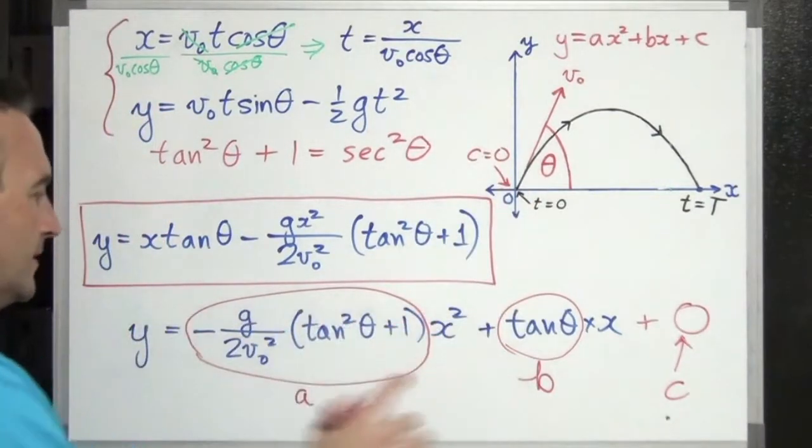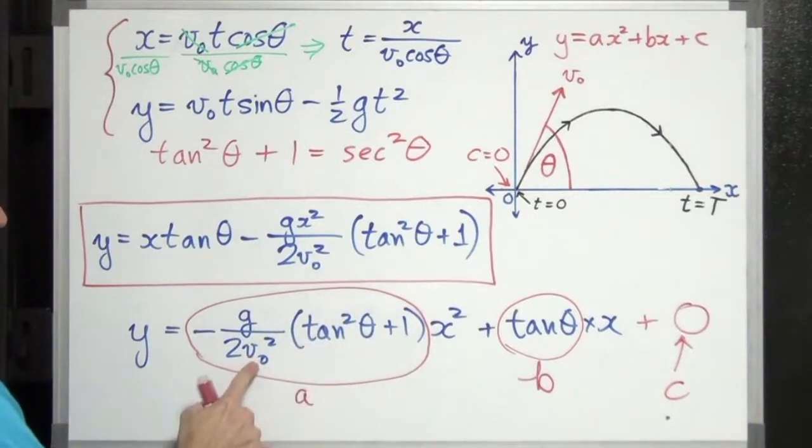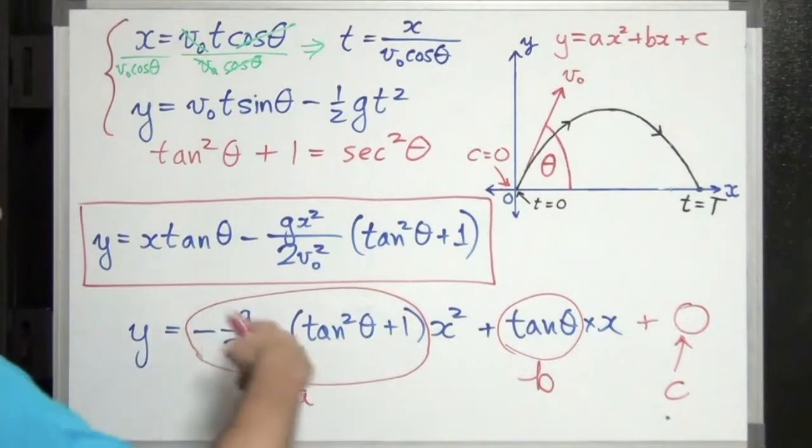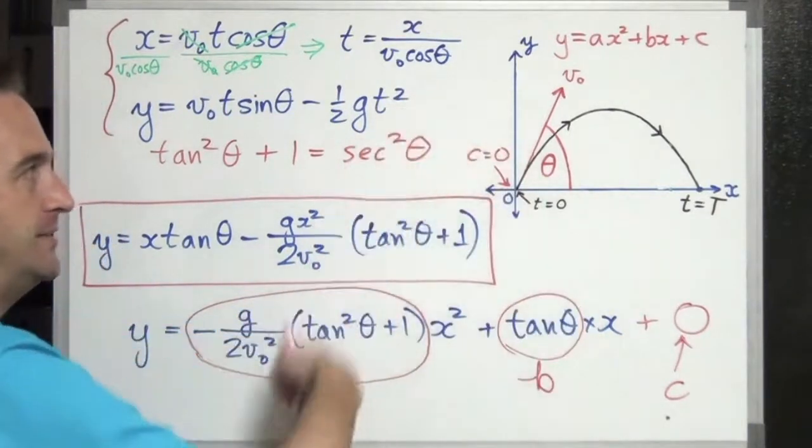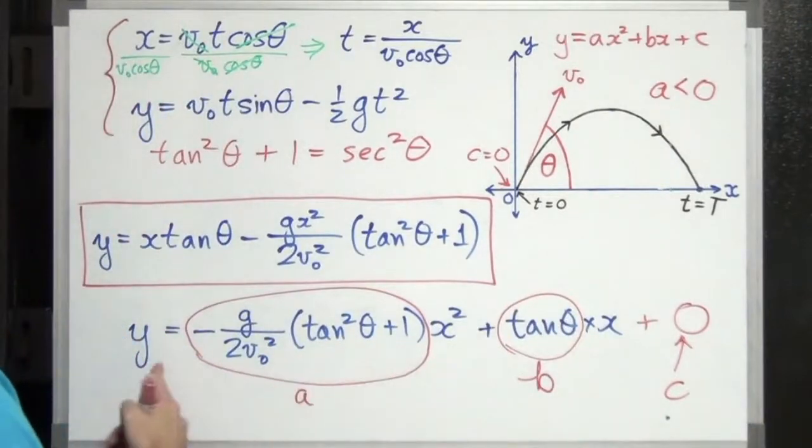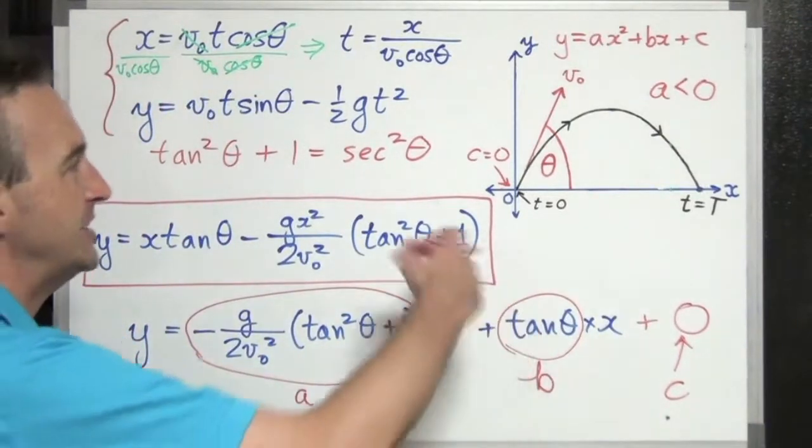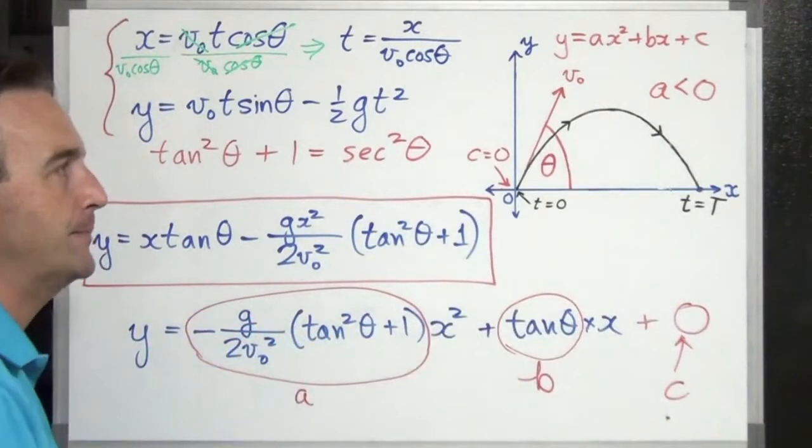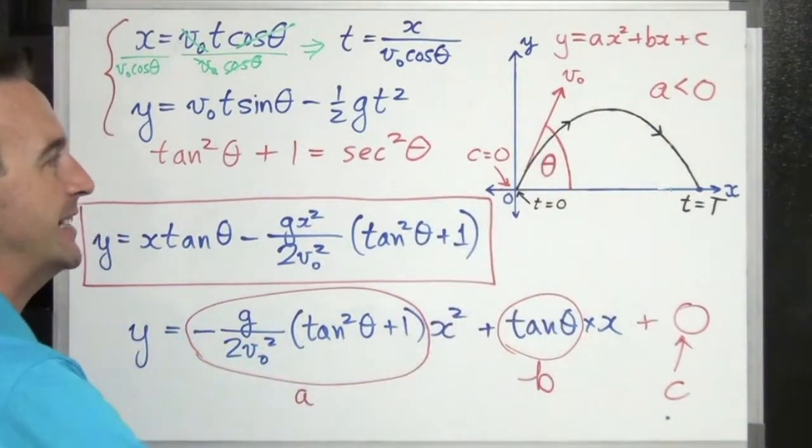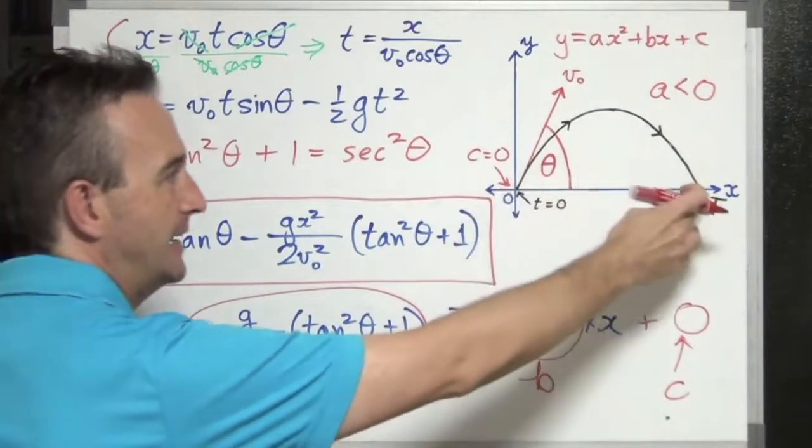So this formula, because this is all constant, v is constant, v naught is constant, g is constant, this is our a value and it's negative which means it opens down, it's concave down. We have a negative a value here which you can see. So that shows that a projectile moves in the path of a parabola. That is when there's no air resistance, it's perfectly symmetrical, and it takes off and lands at the same height.